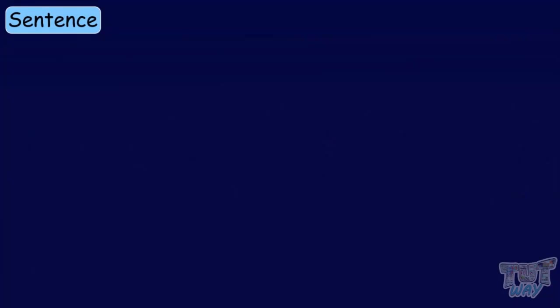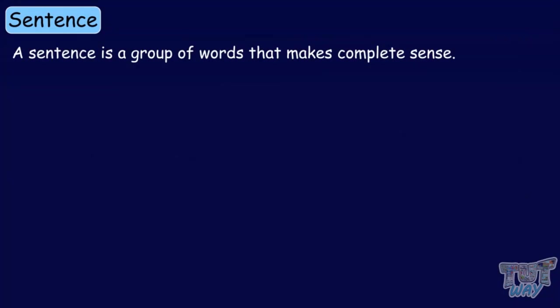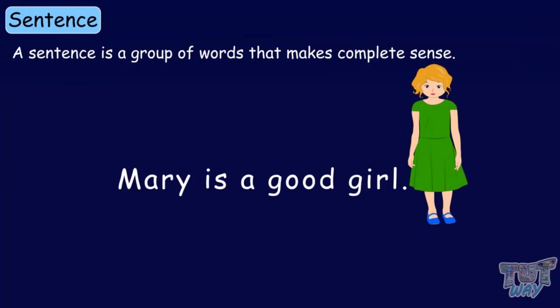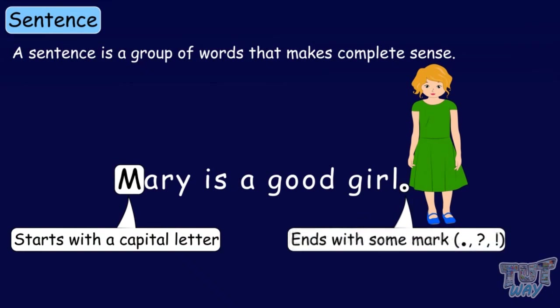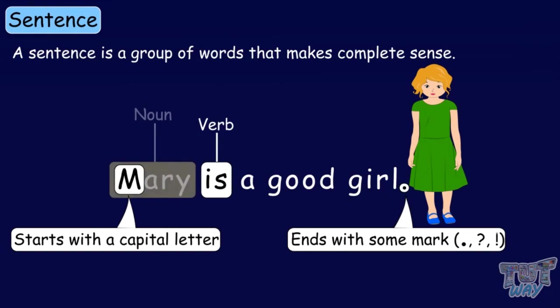A sentence is a group of words which makes complete sense. Each sentence begins with a capital letter. Each sentence ends with an end mark — it can be a full stop, a question mark, or an exclamation mark. Each sentence has a verb or a noun, or both in it.